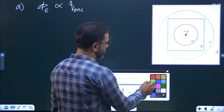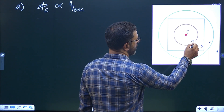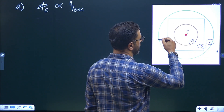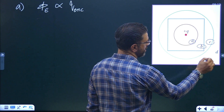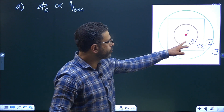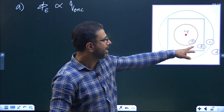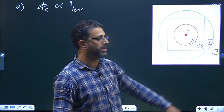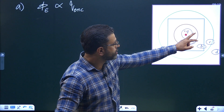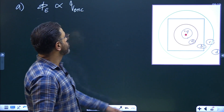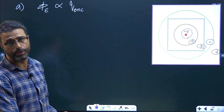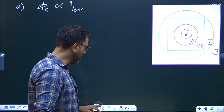We have four Gaussian surfaces here. This one is represented by A, this one by B, this one by C, and this cube by D. So we have two spherical Gaussian surfaces A and C, and two cubical Gaussian surfaces B and D. All of them are enclosing the same charge +Q. So if all of them have the same charge inside them, then all of them will have the same flux through them.